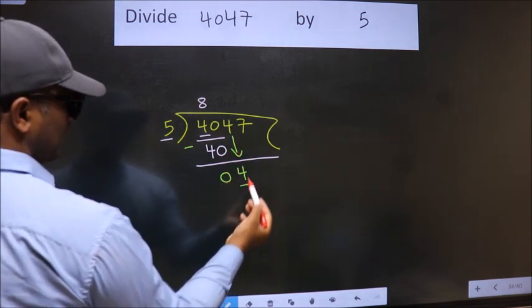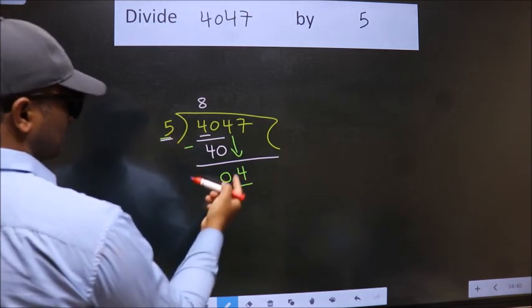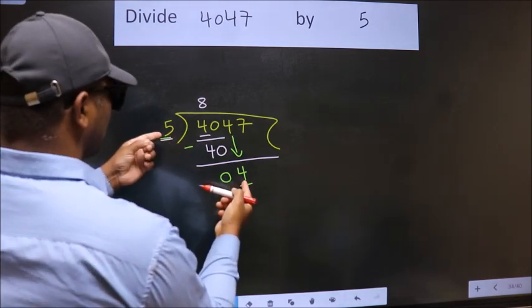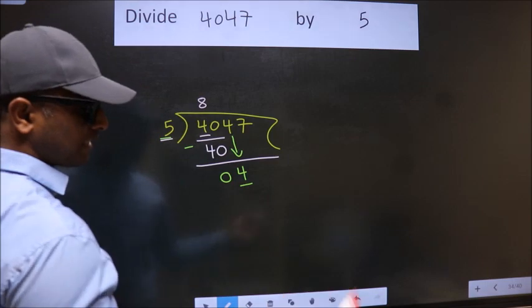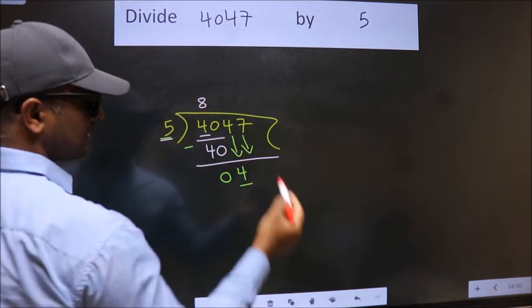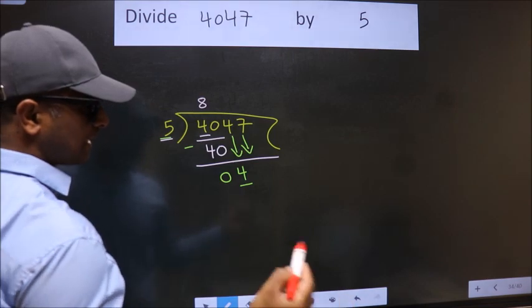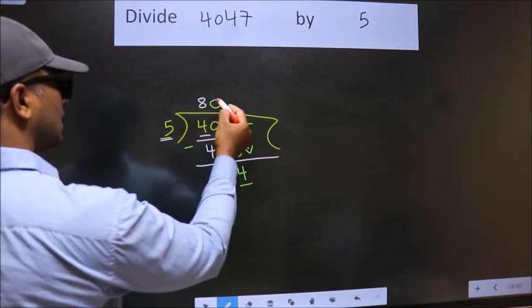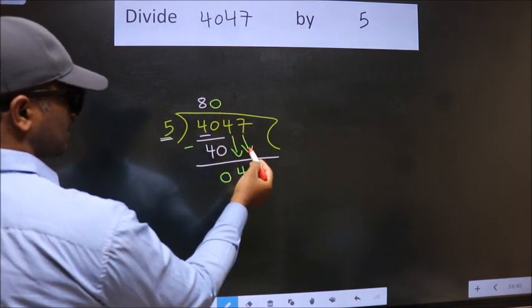Now here we have 4, here 5. 4 is smaller than 5, so we should bring down the second number. And the rule to bring down the second number is put 0 here. Then only we can bring this number down.